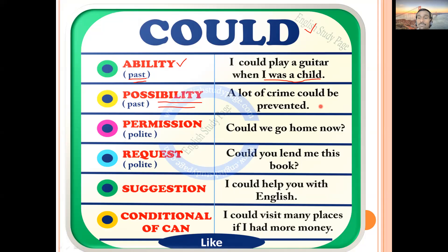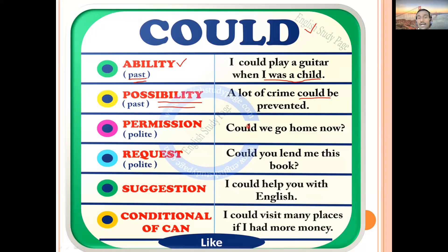Just as 'can' expresses possibility in the present, 'could' expresses possibility in the past. Example: 'A lot of crime could be prevented.' The meaning is that the crime could have been prevented, but in reality no action was taken, so crime was not prevented. That is past possibility with 'could'.